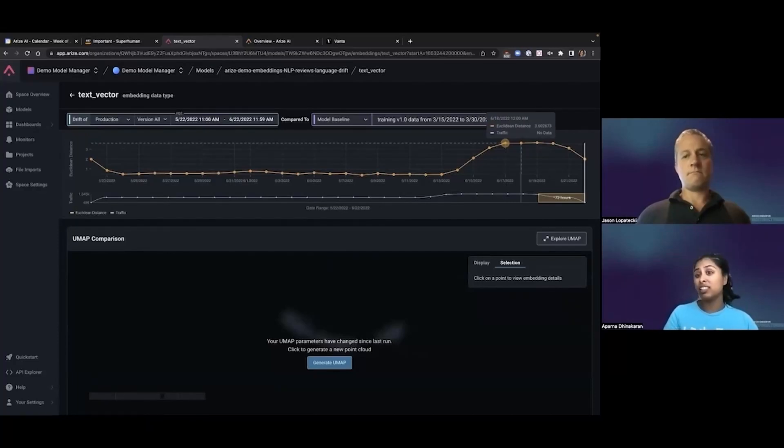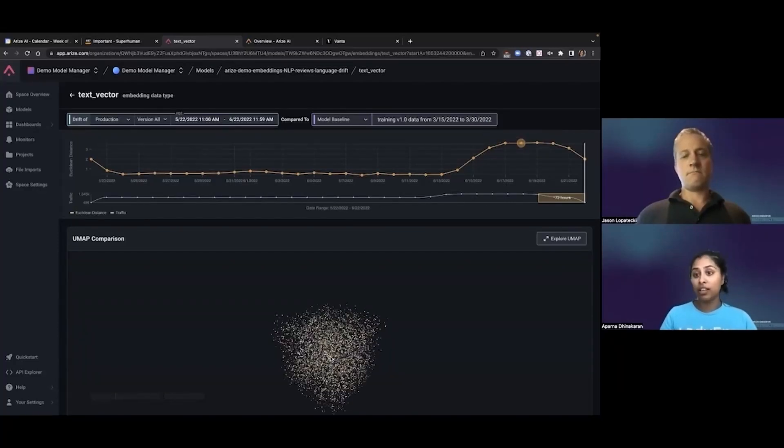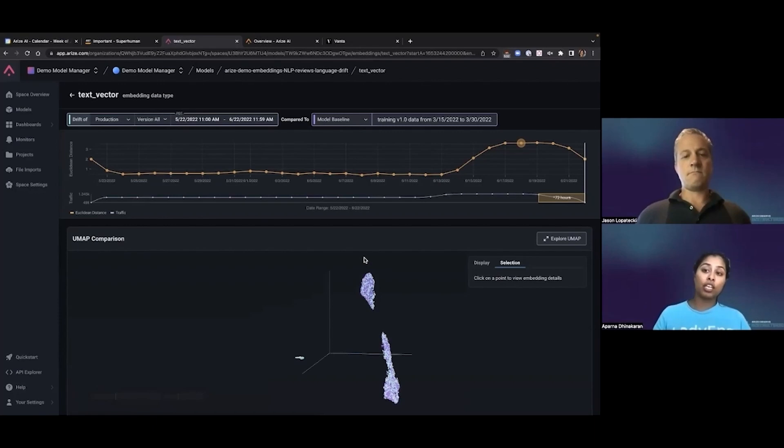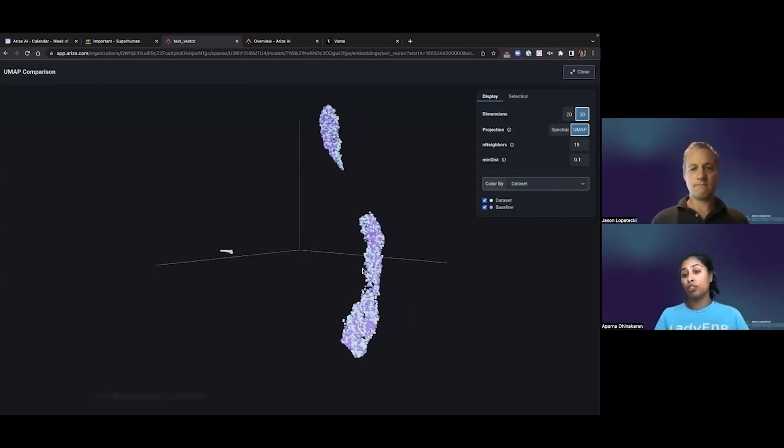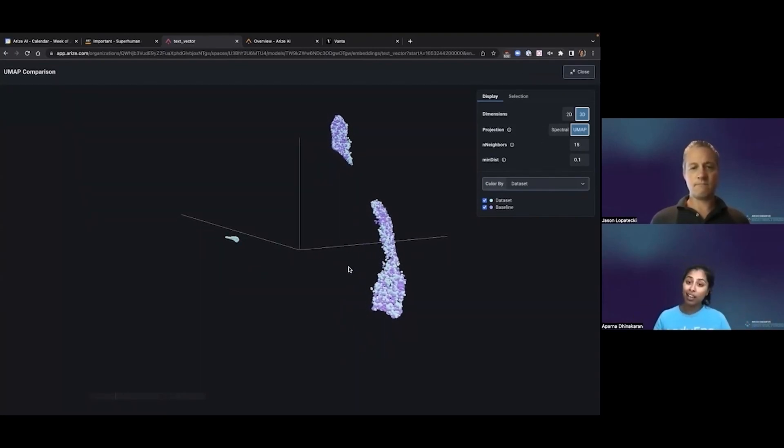But at some point, kind of mid-June, it looks like there's actually some spike in this text vector. It means the data has actually changed. We need to understand what's changed in the underlying data. And this is extremely complicated to troubleshoot. I can't tell you, troubleshooting regular ML is hard. Troubleshooting unstructured data, there's really no tools to be able to do this out there at production, at scale.